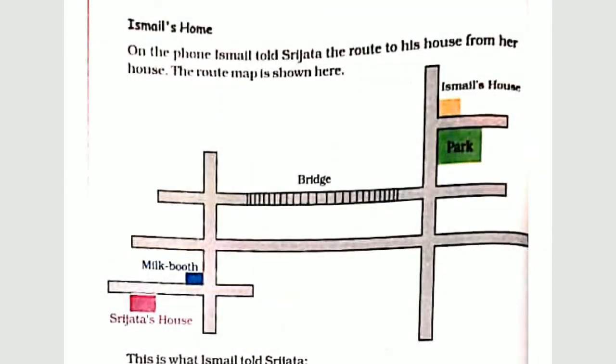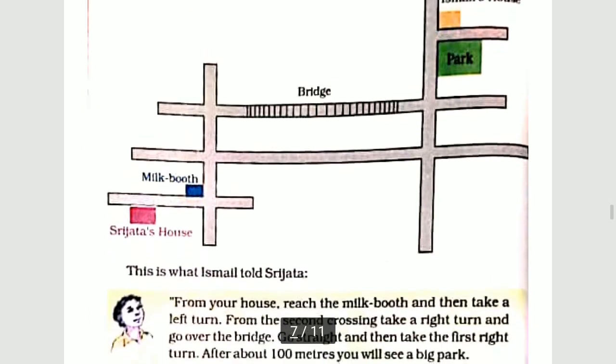Page 58: Ismael's Home. On the phone, Ismael told Shri Jata the route to his house from her house. The route map is shown here. From your house, reach the milk booth where there is dairy and milk, then take a left turn.